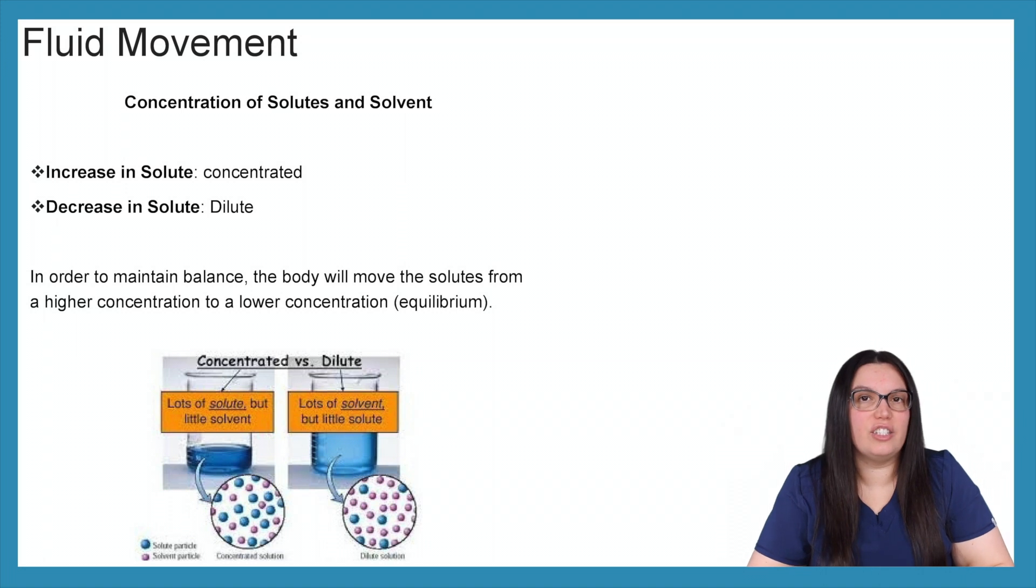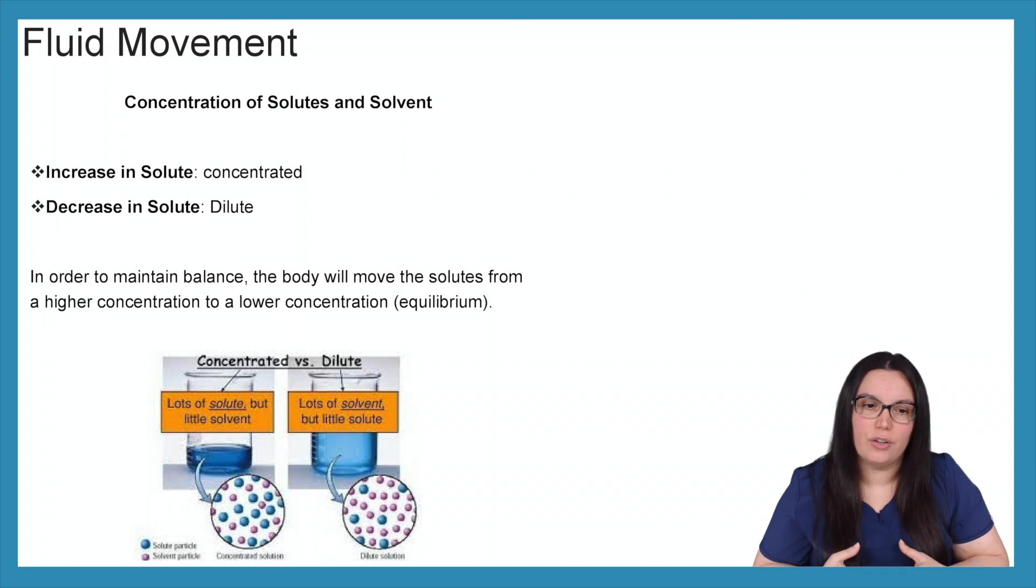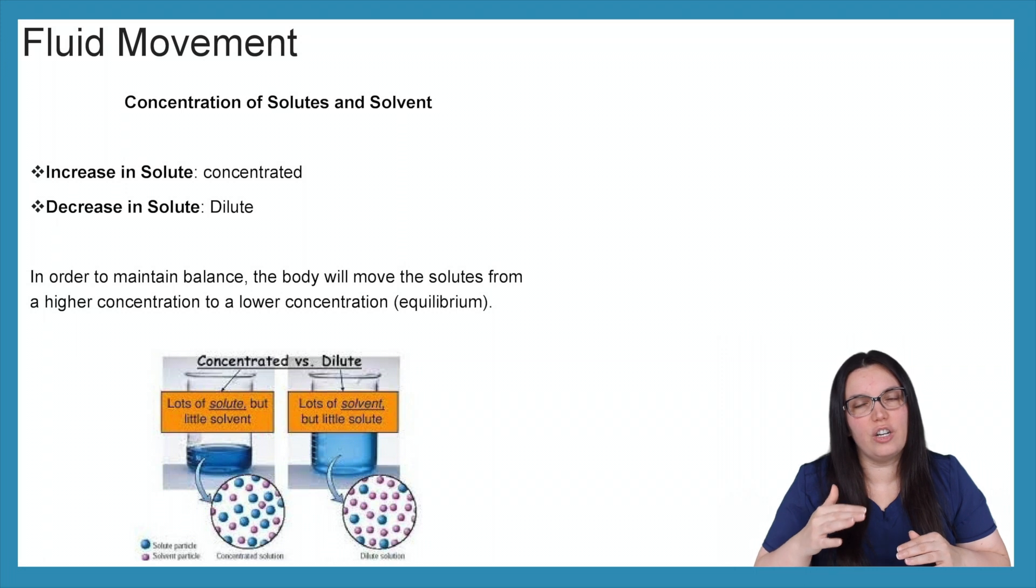Let's look at the concentration of solutes and solvents. If we have an increase in solutes, it's going to have a more concentrated solution, whereas if we have a decrease in solutes, we're going to have a more dilute concentration. Remember, D decrease, we're going to have dilute. If it's increased, it's going to be highly concentrated. In order to maintain this balance, the body will move the solutes from higher concentrations to a lower concentration to maintain an equilibrium.